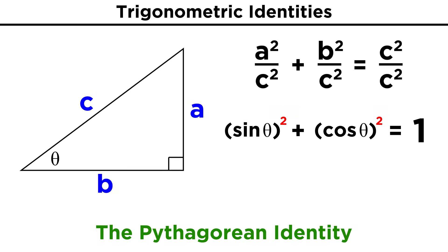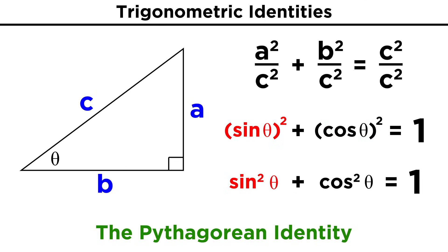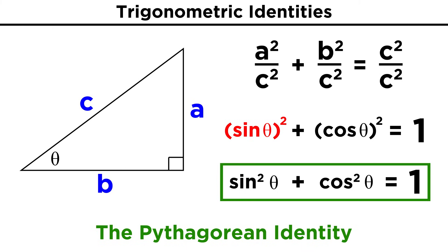When we raise a trig function to an exponent, so that we don't risk ambiguity as to whether the exponent is operating on the term that the function is operating on, or if the exponent is operating on the whole function, the quantity sine theta squared can be written as sine squared theta, with the exponent placed right here. This identity will be used a lot, so it's worth memorizing.